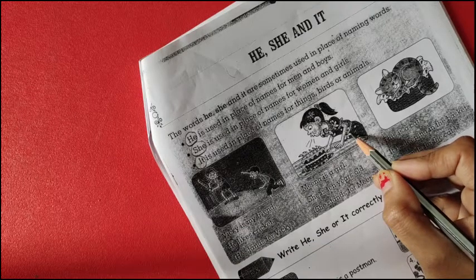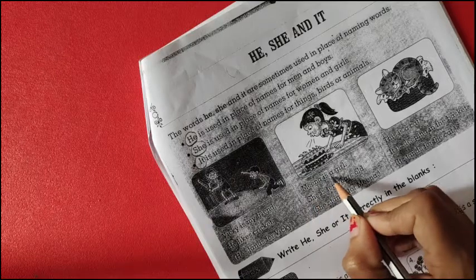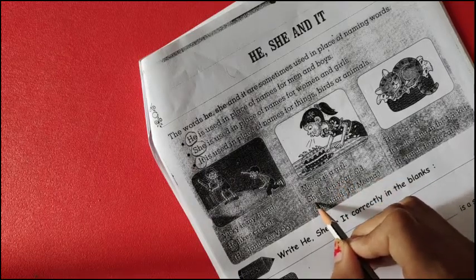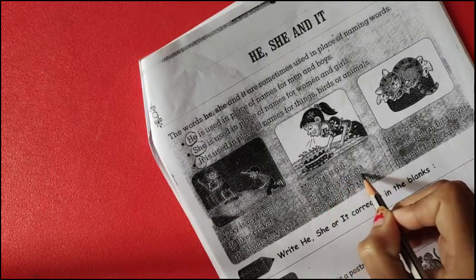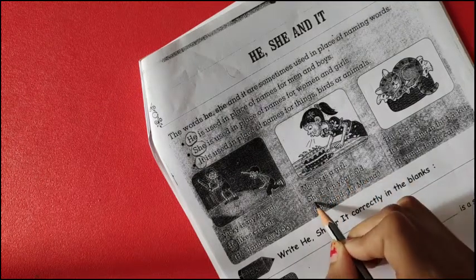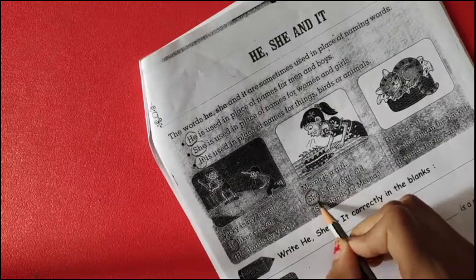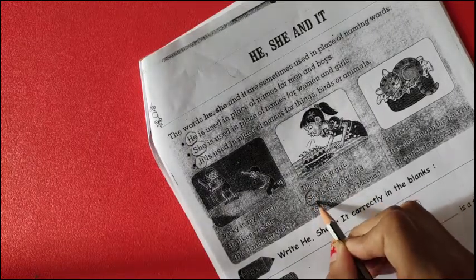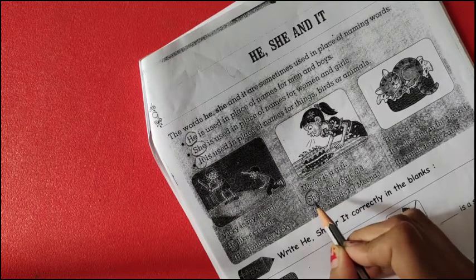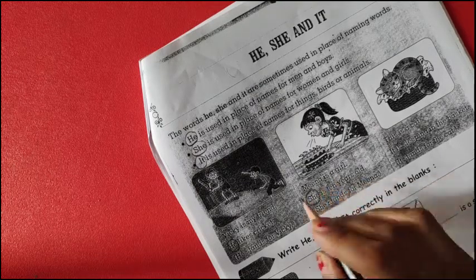Just observe the picture and try to read the sentences. Mina is a girl. She is 10 years old. Mina is a girl. She is 10 years old. So here, she stands for Mina. They changed the noun with the pronoun.